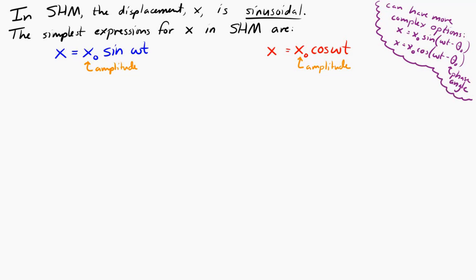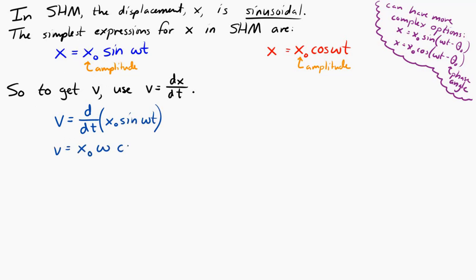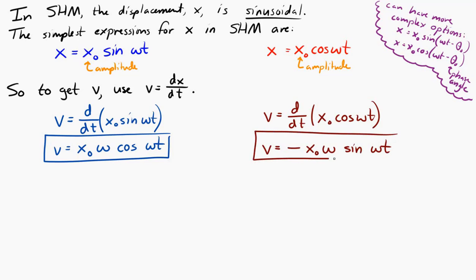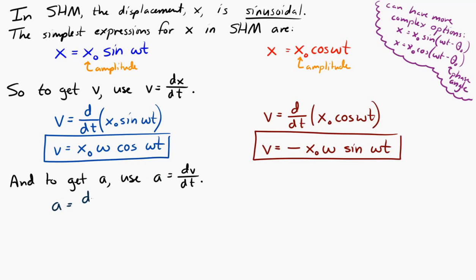If we want to find the velocity of the object in simple harmonic motion, we take the derivative of the displacement, because velocity is the rate of change of displacement with respect to time. If we start with x = x0 sine of omega t, the velocity is the amplitude times the angular frequency times cosine of omega t. If displacement goes as cosine, the velocity equals negative x0 times omega times sine of omega t. Going one more step, acceleration is the derivative of velocity with respect to time, giving expressions for acceleration in both cases.